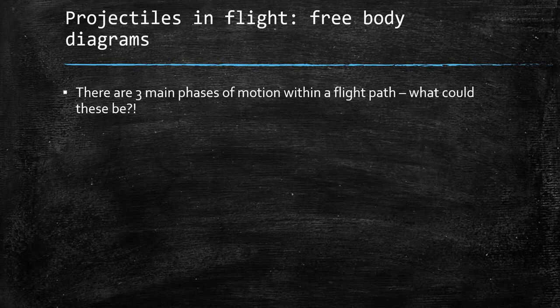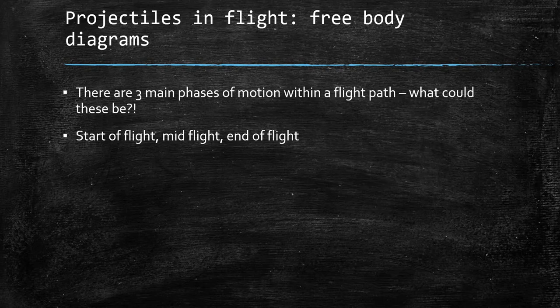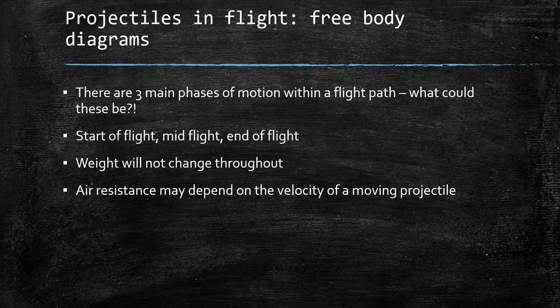There are three main phases of motion within a flight path: the start of flight, mid-flight, and end of flight. Weight will not change throughout — it will remain the same the whole way. Air resistance may change depending on the velocity of the projectile.